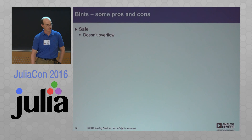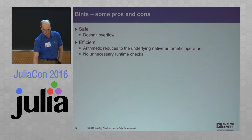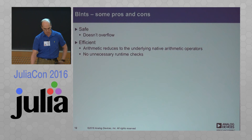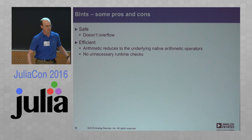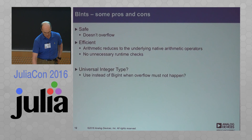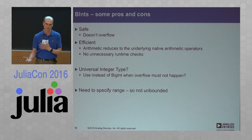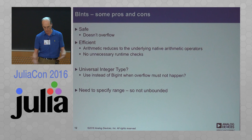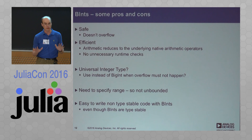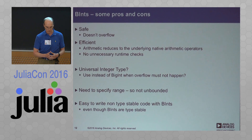So this is sounding pretty good — it's safe, it never overflows assuming I've implemented it correctly, and it's efficient with no runtime checks. Once you're in this number system, there are no runtime checks. Is it a universal integer type? Well, not really, because you need to specify the range at some point, so it's not really unbounded at all. And it's really easy to write non-type-stable code with this.